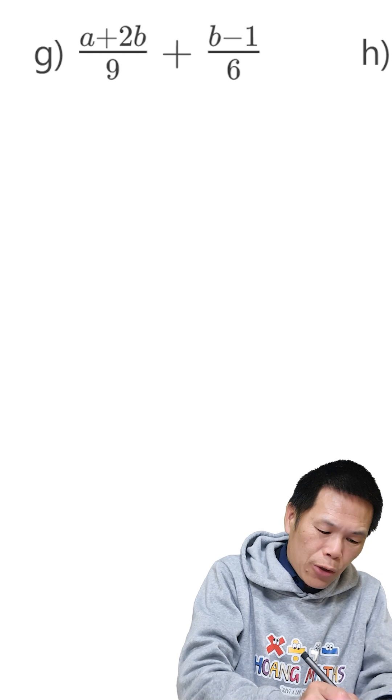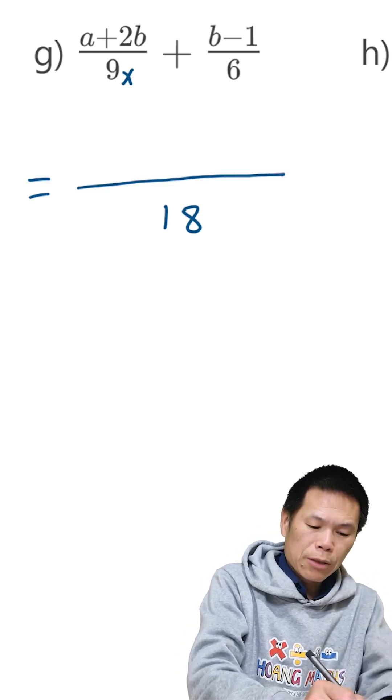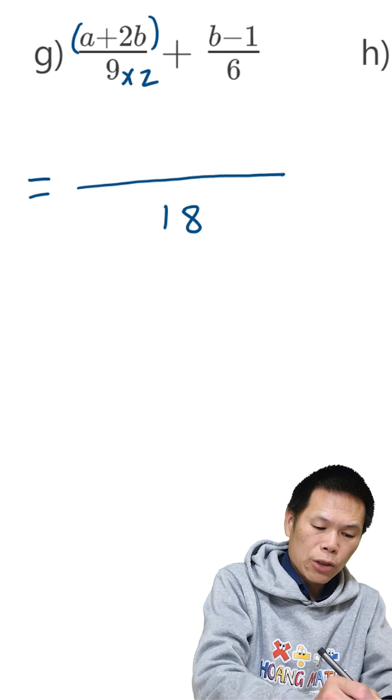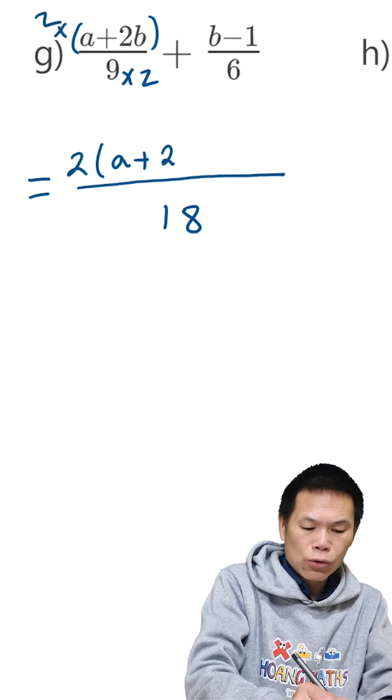So that is equal to 18 here, and we need to times this by 2, so the top times by 2. So that means 2a plus 2b.